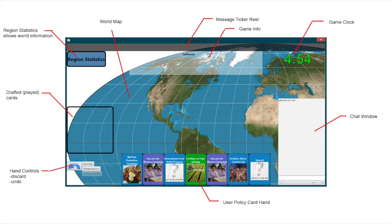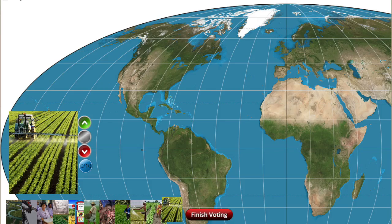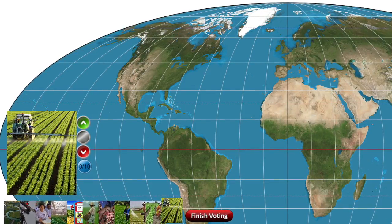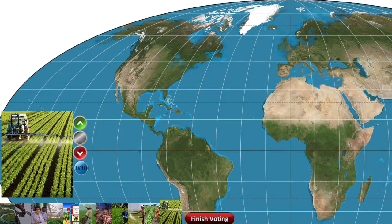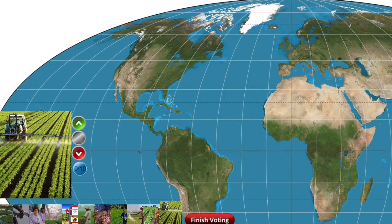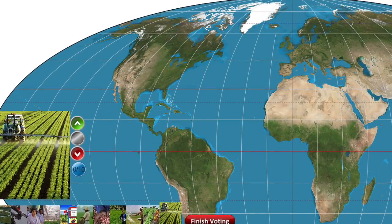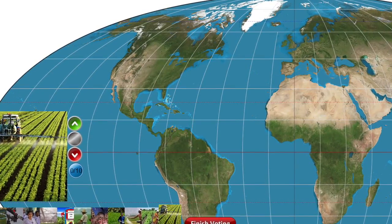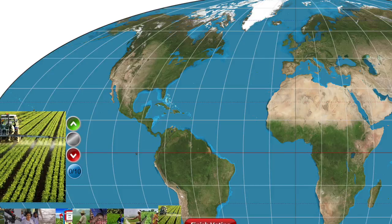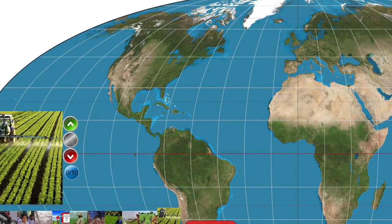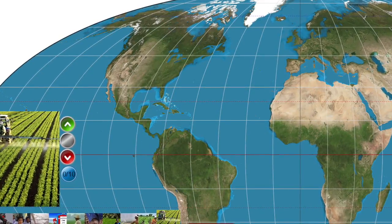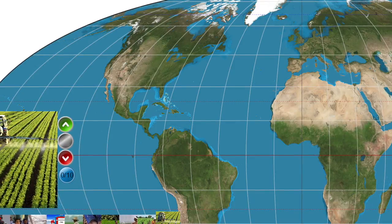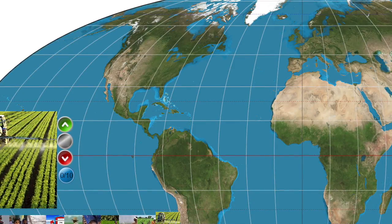Now take a look at a sample voting screen. The card borders change color depending on whether the user voted up (green), abstain (black), or down (red). If a card has enough votes, its border becomes gold. There will also be a game clock and chat window, as in the drafting layout.